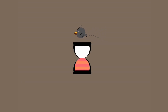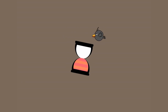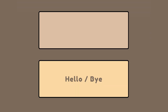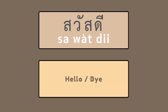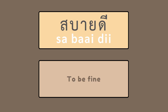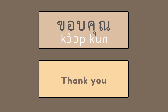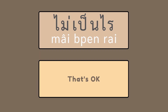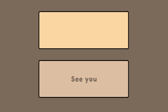Before we move on to the quiz, listen again. This time, the English definition is given first, followed by the Thai word. Hello, bye — สวัสดี. To be fine — สบายดี. Thank you — ขอบคุณ. Sorry — ขอโทษ. That's okay — ไม่เป็นไร. See you — แล้วเจอกัน.